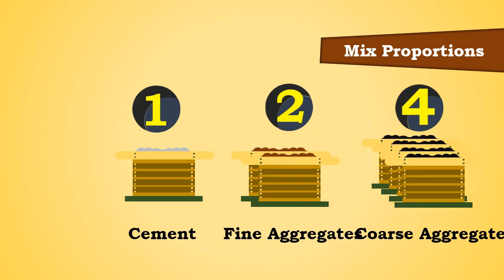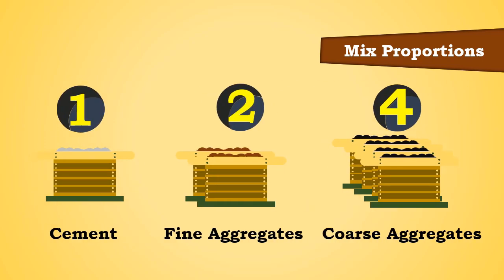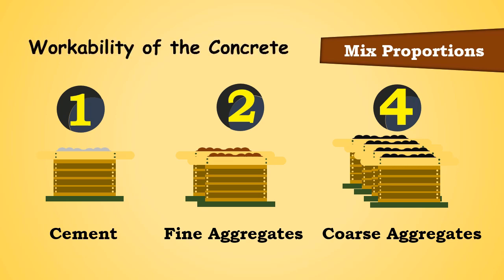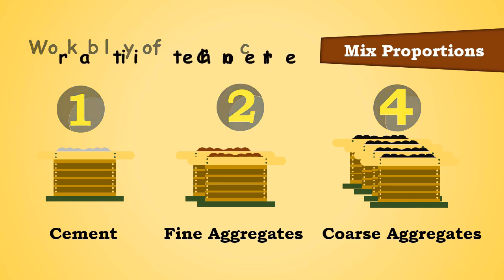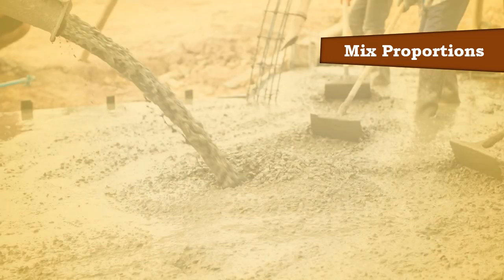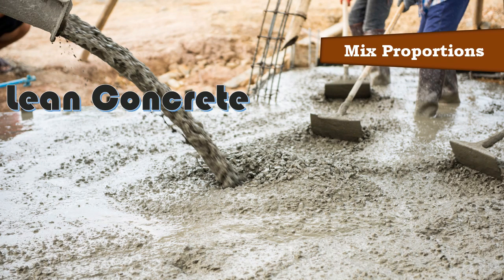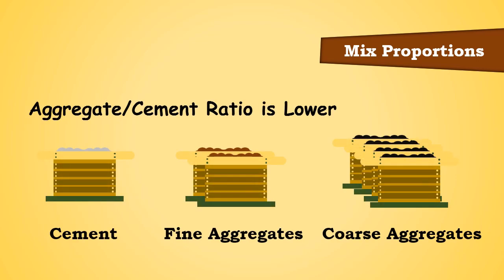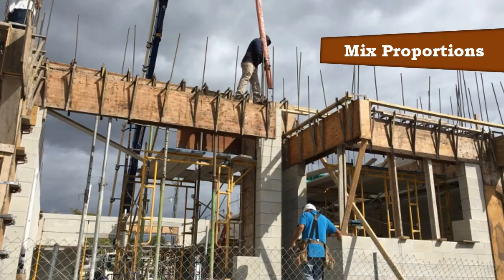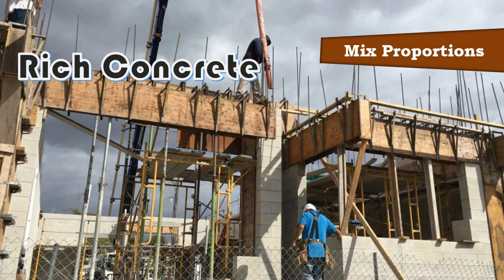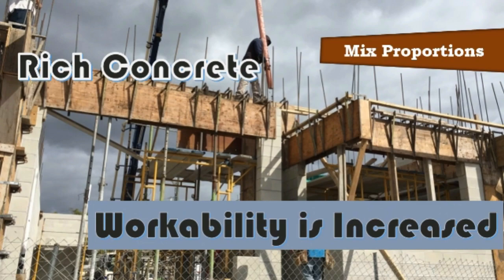Mix Proportions. In general, the aggregate-cement ratio is also an important factor which influences the workability of the concrete. If the aggregate-cement ratio is higher, lean concrete is formed. In this case, less quantity of paste is available for providing lubrication, and hence workability is reduced. Whereas, if the aggregate-cement ratio is lower, a rich mix is formed. In this case, more paste is available to provide lubrication, and hence better workability of the concrete is observed.